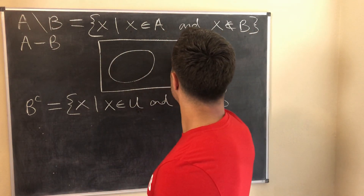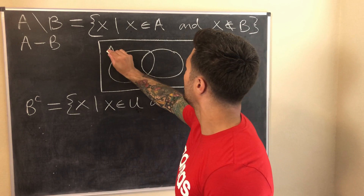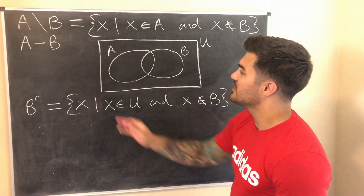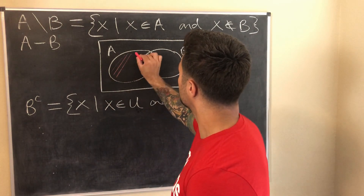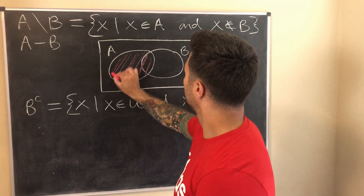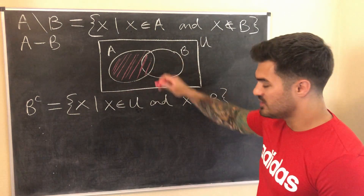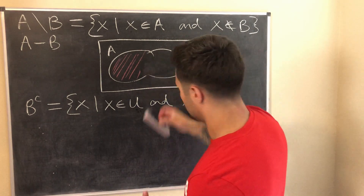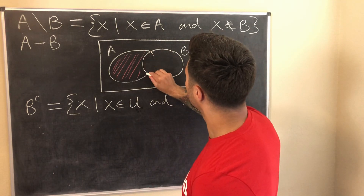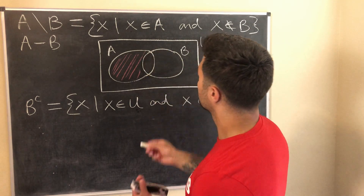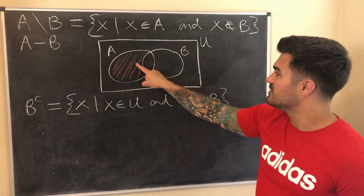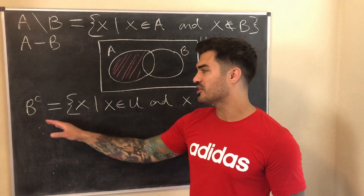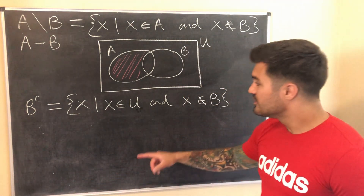In a Venn diagram, we fill in all of A, then remove the portion that overlaps with B — the intersection. What we're left with is all elements in A that are not in B. Now for the complement: the complement of a set is all elements that are in the universal set and are not in that set. Informally we just say 'elements not in the set,' since the universal set part is understood.